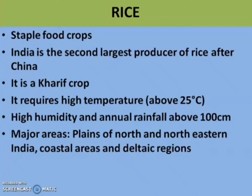Rice requires high temperature — more than 25 degree Celsius — with high humidity. The rainfall should be more than 100 centimeters. If it is less, paddy cultivation is possible only by irrigation. Rice is grown in the plains of North and North-Eastern India, coastal areas and the delta region. The areas of Punjab, Rajasthan, Haryana and West Uttar Pradesh have shown good cultivation of rice with the help of canal and tube irrigation.